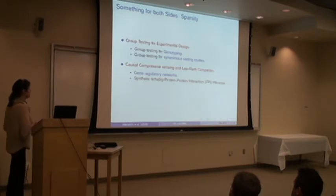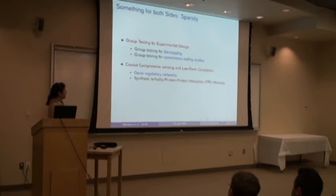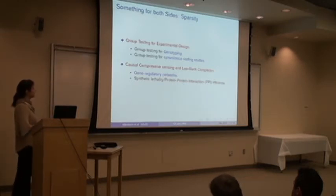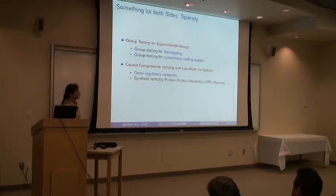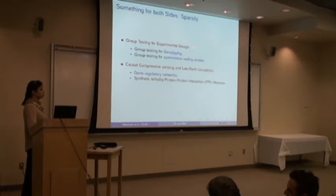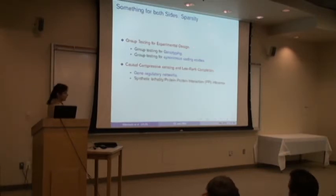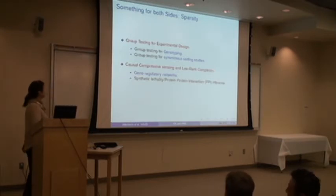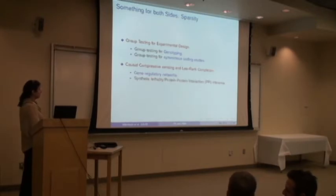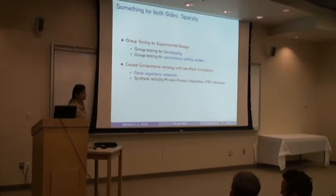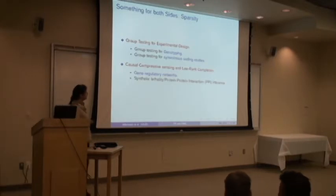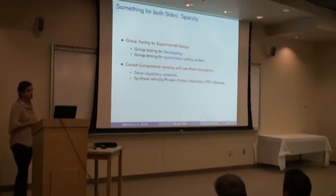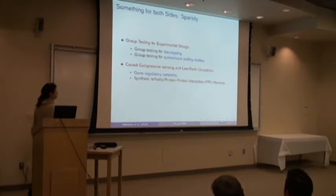The first part of the talk will focus on group testing for experimental design and on the paradigm of compressed genotyping, which has recently emerged for screening individuals for the presence of rare mutations that may cause debilitating genetic diseases. I'll also mention a problem we're working on right now called synonymous coding studies, which ties nicely to group testing and coding theory. In the second part, I'll discuss gene regulatory and protein-protein networks through a new technique we call causal compressive sensing, or Granger causality compressive sensing. The joint theme for these two topics is that we are using sparsity in the data to address the issues.